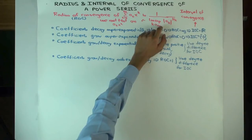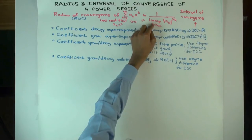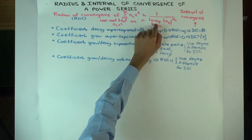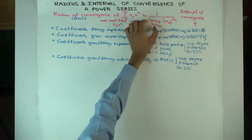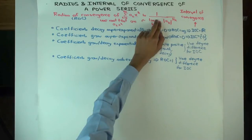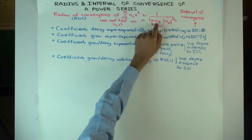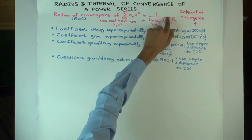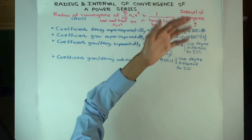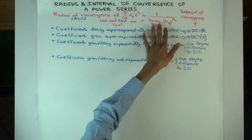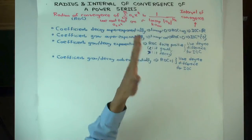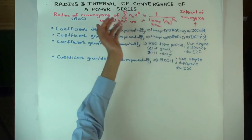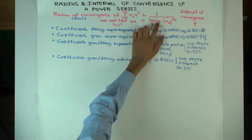The limit superior, or LIMSUP — this concept is not usually done in basic calculus courses; it's usually done only in analysis or advanced calculus. Basically, it's like taking a limit, but the LIMSUP is ignoring the small values and looking at the biggest ones, just taking the limit of the largest values. So if you don't know it, think of it as a limit but ignoring where the sequence takes very small values. The radius of convergence is 1 over this LIMSUP.